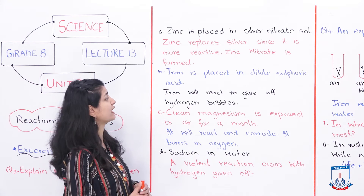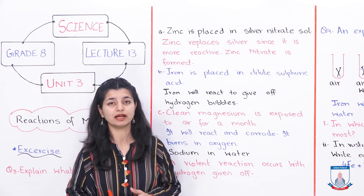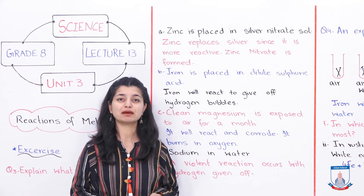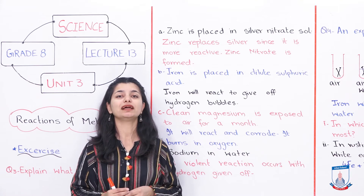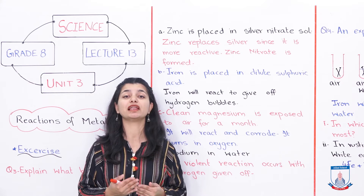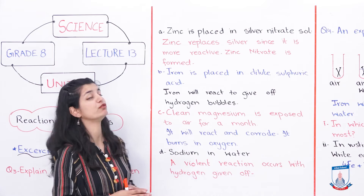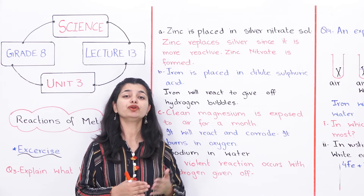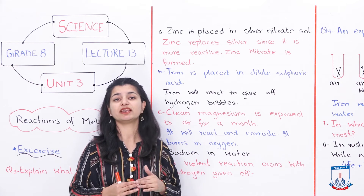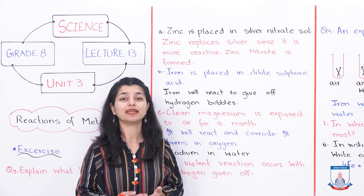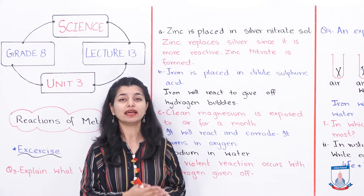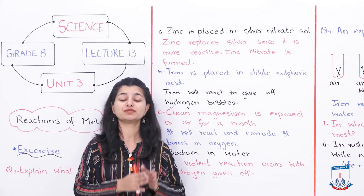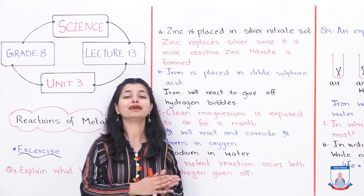Part B: iron is placed in dilute sulfuric acid. Now what will happen here? If you refer to page number 34, the whole table tells you how metals in the reactivity series behave. Iron will react to give off hydrogen bubbles. It will not be a very violent reaction, but it will react. Iron is not too low in the reactivity series — it is in the top few metals, so it will show a reaction. If you see the image in the beginning pages, you will see the reaction between iron and dilute sulfuric acid.